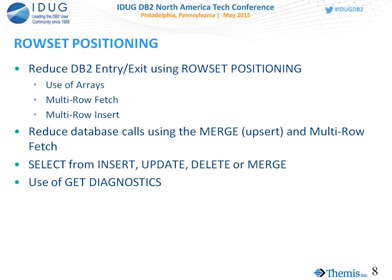To be able to use row-set positioning or row-set processing, you also need to understand GET DIAGNOSTICS. Because if you're doing multiple rows with one trip to DB2, DB2 may need to pass back to you multiple SQL conditions — negative SQL conditions, exceptions. That's the purpose of GET DIAGNOSTICS.